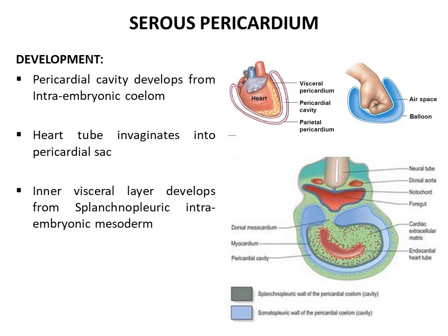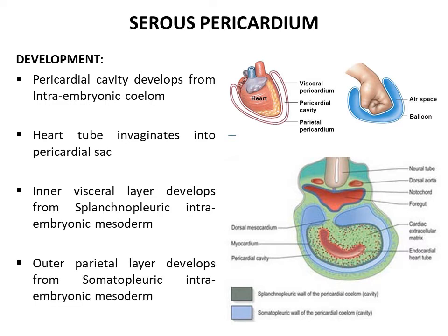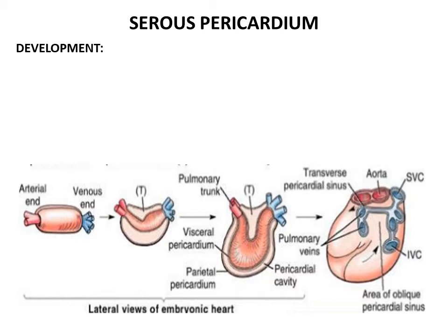The splanchnopleuric intraembryonic mesoderm develops to form the inner visceral layer of serous pericardium, and the outer somatopleuric intraembryonic mesoderm develops into the outer parietal layer of serous pericardium. The two layers — visceral and parietal — are continuous with each other at the two ends of the heart tube: the arterial end and the venous end.